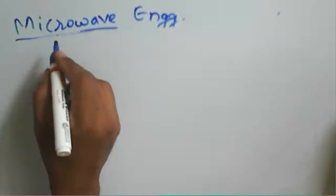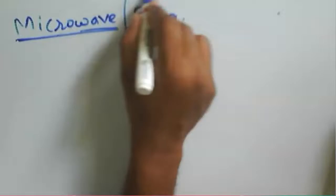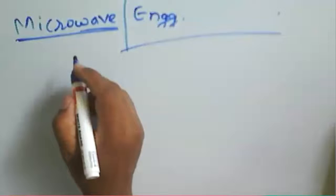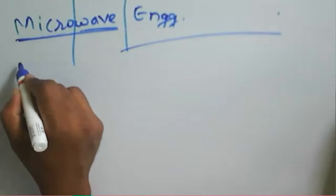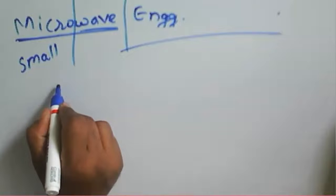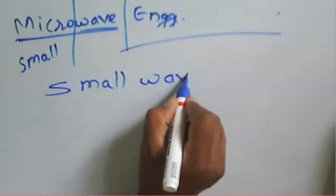We start with the band designations. Microwave is the branch of engineering we are dealing with. If you break down the word 'microwave': 'micro' means small, and 'wave' means a wave — so microwave literally means a small wave.